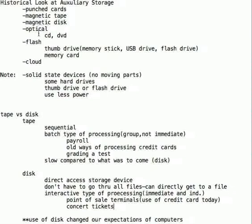As we continued to evolve from a technological point of view, we went into optical storage, which is laser or light technology, and that's where your CDs and DVDs come in. And we have flash technology — your thumb drive, flash drive, or USB drive. Also a memory card. These are the kinds of things that use flash technology, flash memory.